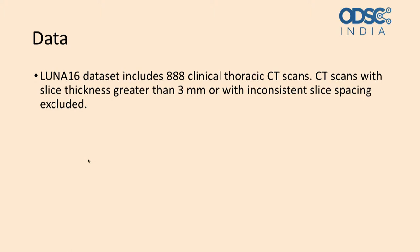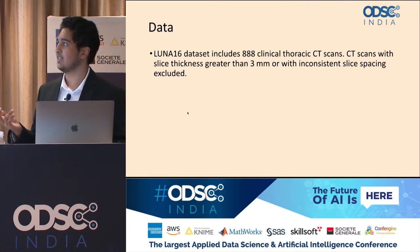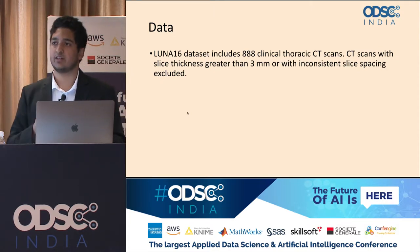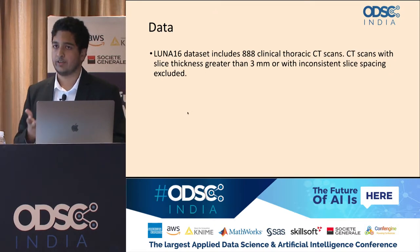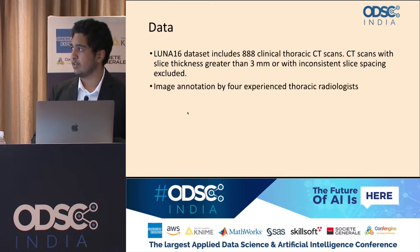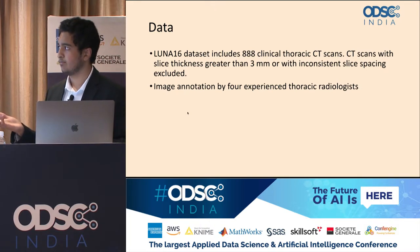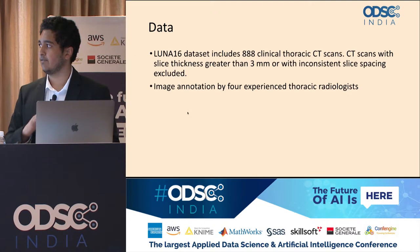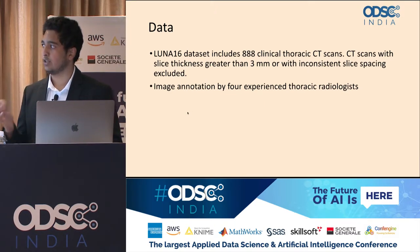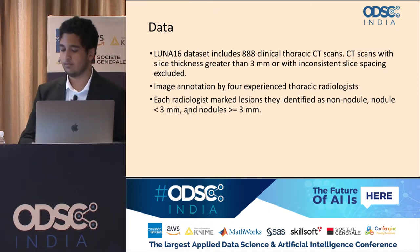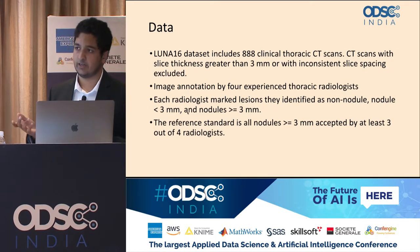The Luna16 dataset was used, which has almost 900 thoracic CT scans. This dataset is already quite clean — scans with slices greater than 3 millimeters were removed, since slices that thick might cause you to miss the lung nodule altogether. Images were annotated by four experienced radiologists to establish a gold standard and address inter-radiologist variance. Each radiologist marked lesions as nodule or non-nodule. The reference standard is that at least 3 out of 4 radiologists must identify it as a nodule greater than or equal to 3 millimeters for it to be labeled as a nodule.